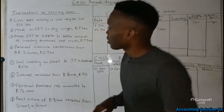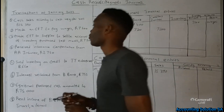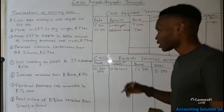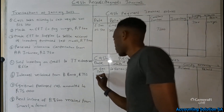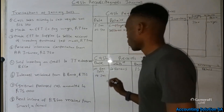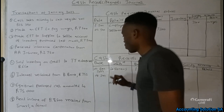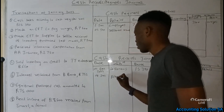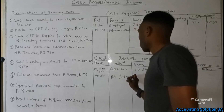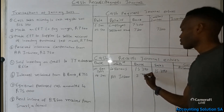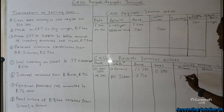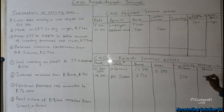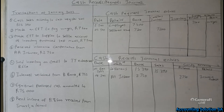Transaction number four: received insurance compensation from AA Insurer of 2,750. This is an amount we receive, so we go to cash receipts general. Date is 4 January, details show AA Insurer. The amount is 2,750, and because there is no specific column for it, we go to the sundry account and record 2,750 as insurance expense.